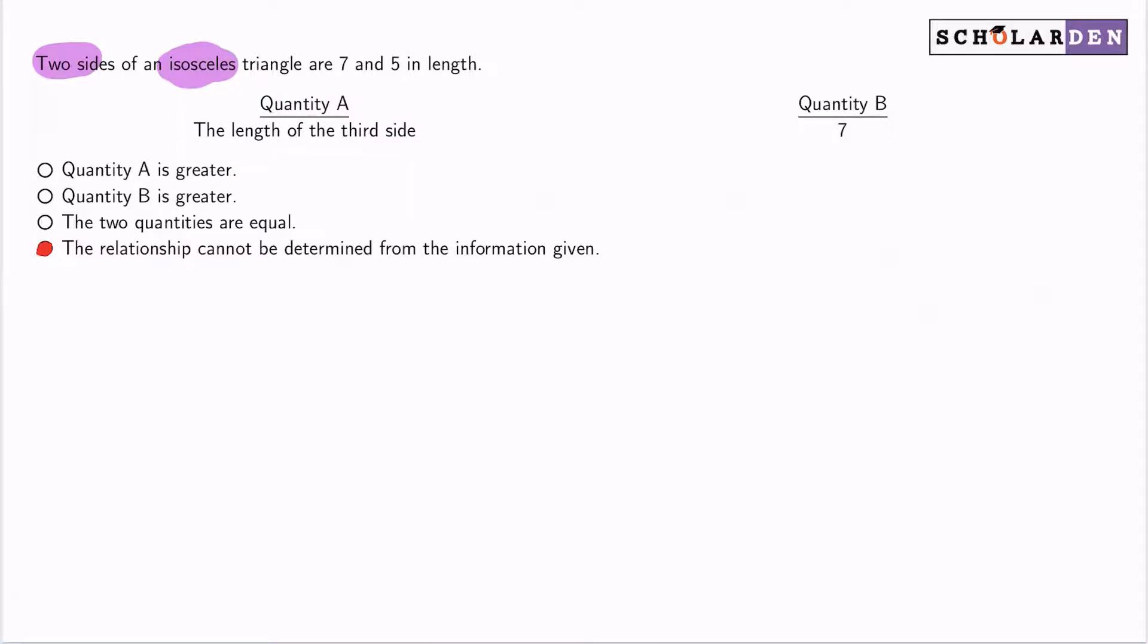We have seven and five. If our triangle is isosceles, that means that we have a pair of congruent sides. That means two sides are the same. So if we have two sides being five and seven, the third side is either going to be five or seven.